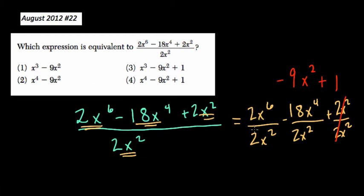Now we're subtracting here. 2 over 2 is 1. x to the sixth over x to the second is x to the fourth, and that's it. Break this up in terms, divide the numbers, subtract the exponents, rewrite the operations between, and you're finished.